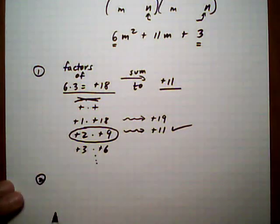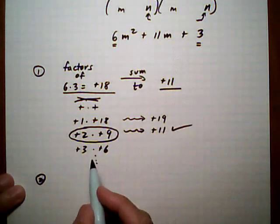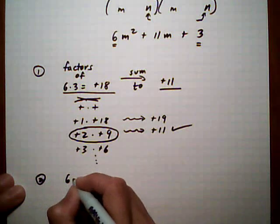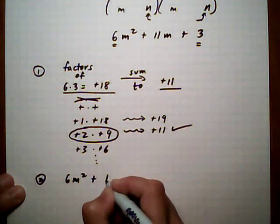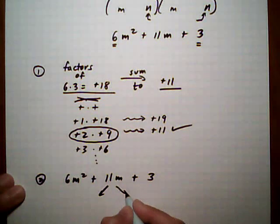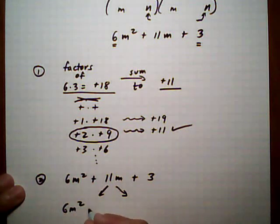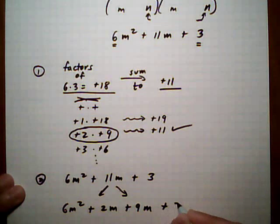Once you find those, what you want to do is rewrite the original trinomial here by splitting the middle term. And I'll show you what I mean. So split this middle term into those two factors that we just found. All right, 11 is the same as 2 plus 9. So we're going to split it up. 6m squared plus 2m plus 9m plus 3.